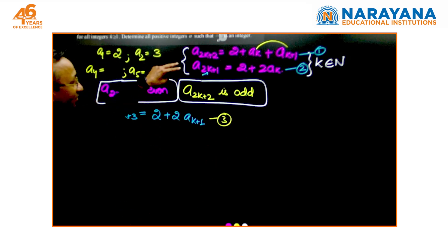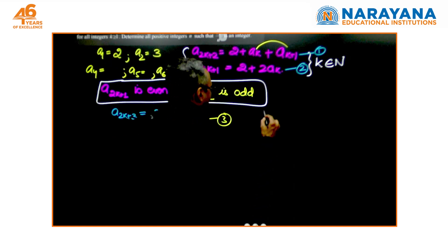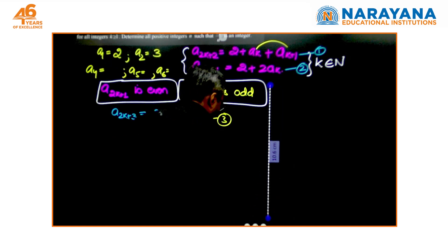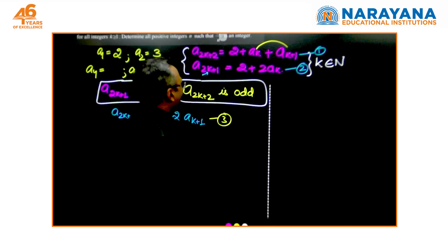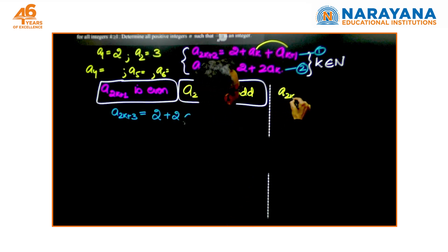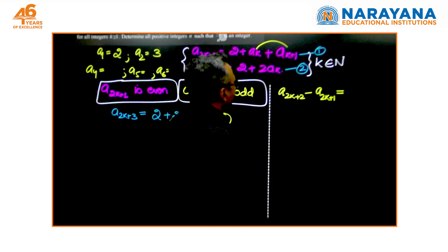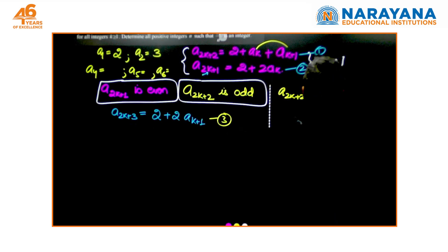Let me call this equation as the third equation. Now, if you realize when you subtract, let me create some space here. When you subtract 2 from 1 or 1 from 2, whichever way you go, you will get a result a2k+1 minus a2k+2 equals your 2 gets cancelled with 2 and you are left with ak+1 minus ak.